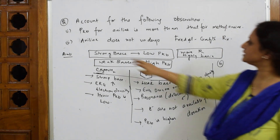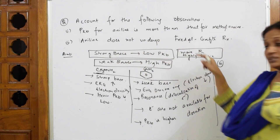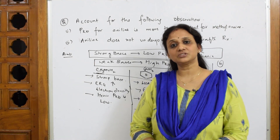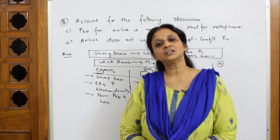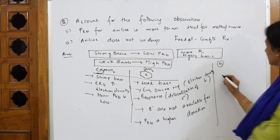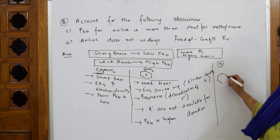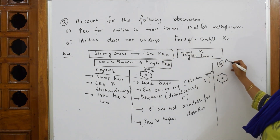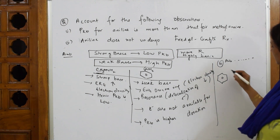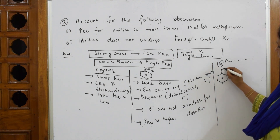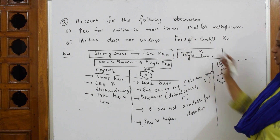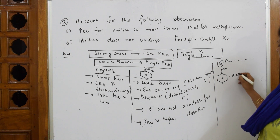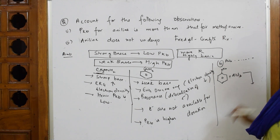Now for part B: aniline does not undergo Friedel-Crafts reaction. We have done nitration, sulfonation, and halogenation of aniline, but not Friedel-Crafts alkylation or acylation. The reason: in Friedel-Crafts reaction, the Lewis acid used is anhydrous AlCl3. Copy the question and start your answer — 'Aniline does not undergo this reaction because...'